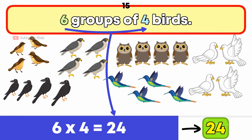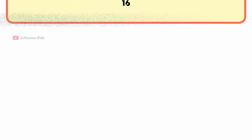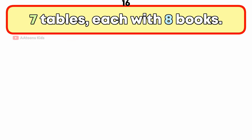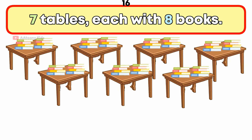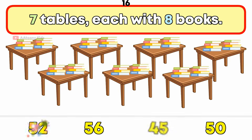7 tables each with 8 books. How many books are there in total? 56 books.